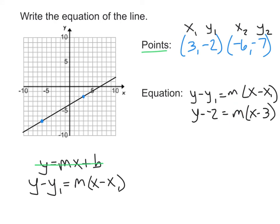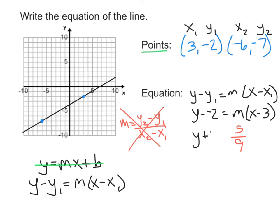We still need our slope. We could use the slope formula, but it's quicker to count from the graph. From one point to the other: the rise is 5, and the run is 9. So our slope is 5 over 9. Our final answer is y plus 2 equals 5 over 9 times x minus 3.